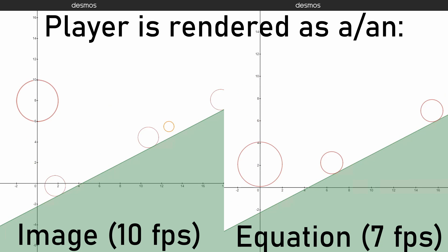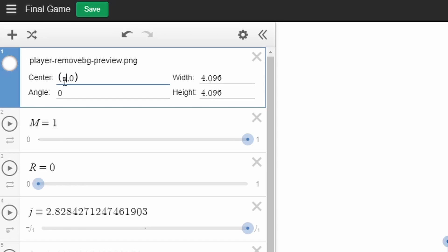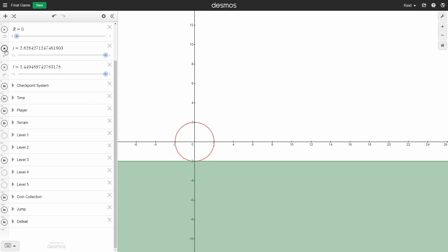I replaced the equations with images pretty easily, too. All I did was go into paint and draw a circle, import it into Desmos, and move the x and y offset functions into the position field so it moves in the exact same way.